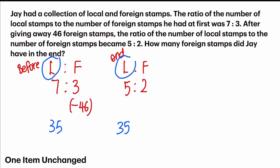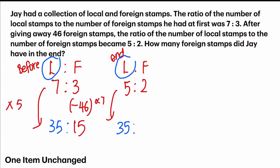Why are we changing it to 35 units? Because nothing was done to these two ratios for local stamps, and they should be of the same units, but they are not. So our job is to change to an equivalent ratio based on the unchanged item, which is local stamps. So 7 times 5 gives me 35, and 3 times 5 gives me 15. For the right-hand side, I multiply by 7, so 2 times 7 gives me 14. Now I have two new sets of ratio: 35 to 15, and 35 to 14. Since I have the new ratio, I no longer refer to the old ratio.